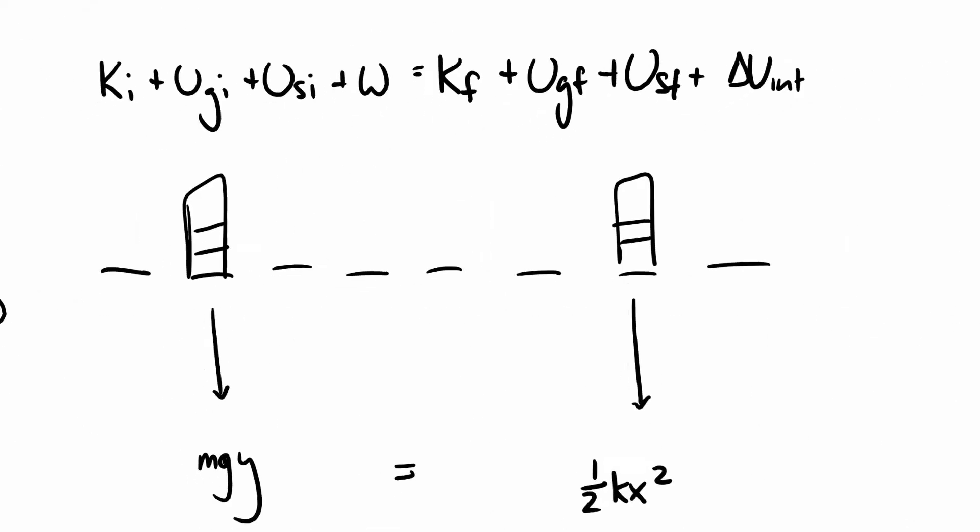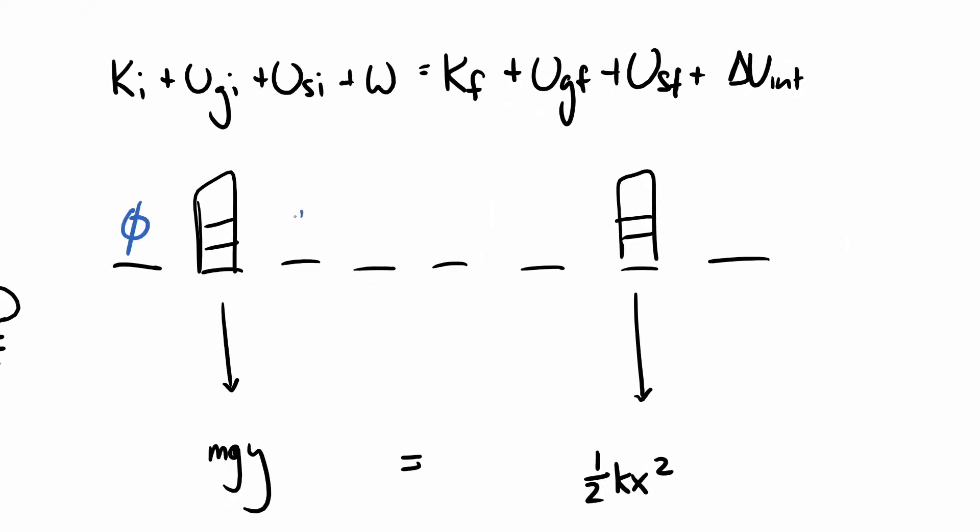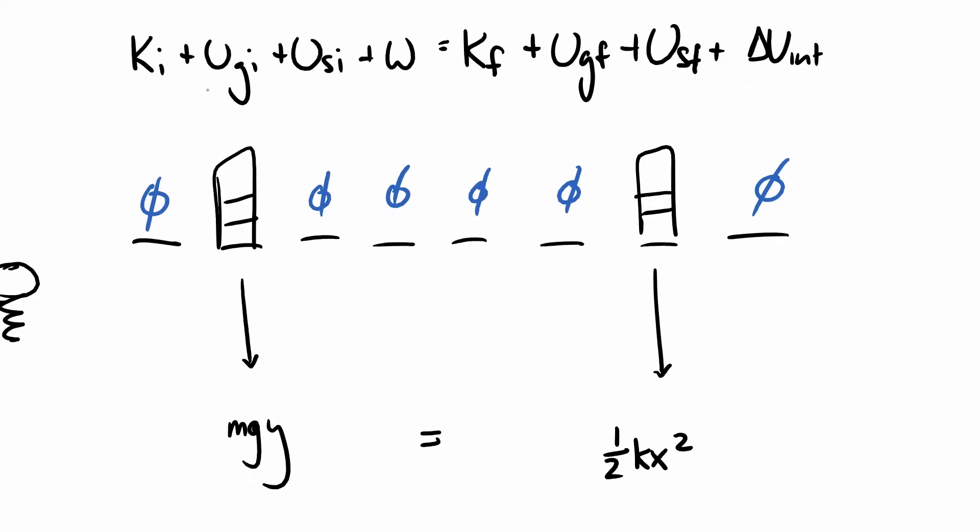So initially, it's still not moving, no springs to start, no work that I'm looking at. Finally, not moving, no height to speak of, nothing heating up. So just all gravitational to all elastic. I should point out, these things can get more complicated than this. You could have many types of energy at once. I've just done a couple of simple examples to get you started. So again, M, G, Y to one half K X squared. Let's see what we got here.